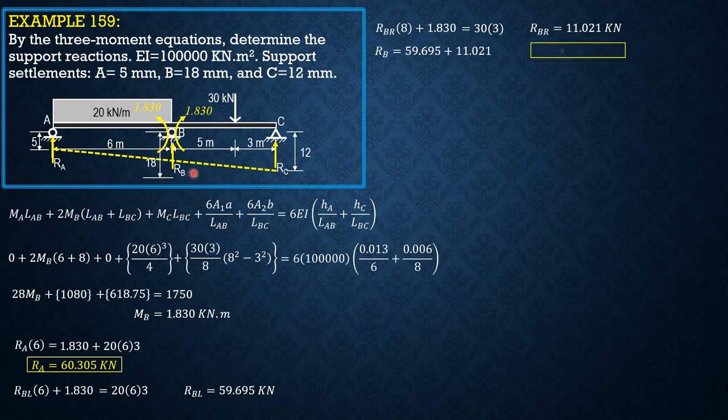So RB right = 11.021 kN. We can now solve RB: RB left + RB right, so 59.695 + 11.021 = 70.716, which verifies our answer again.